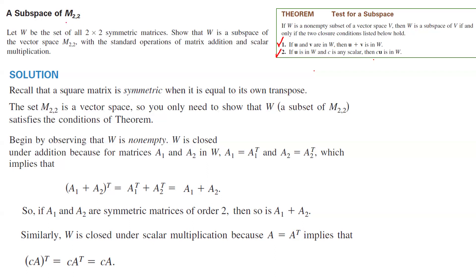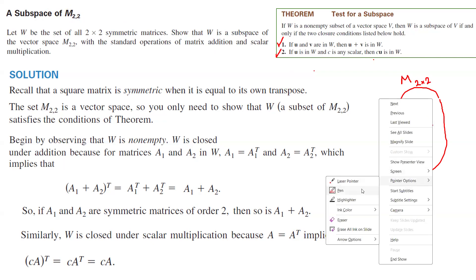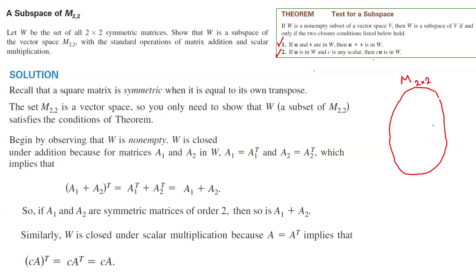For scalar multiplication, W is closed under scalar multiplication. If A is symmetric, then (cA)ᵀ = c·Aᵀ = c·A. So cA is also symmetric. Both conditions are met, so W is a subspace of the space of all 2×2 matrices. The set of symmetric 2×2 matrices forms a vector space and is a subspace of the larger vector space.